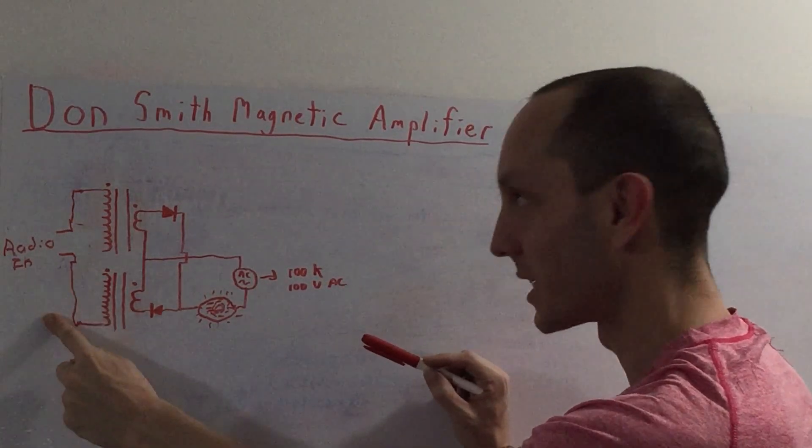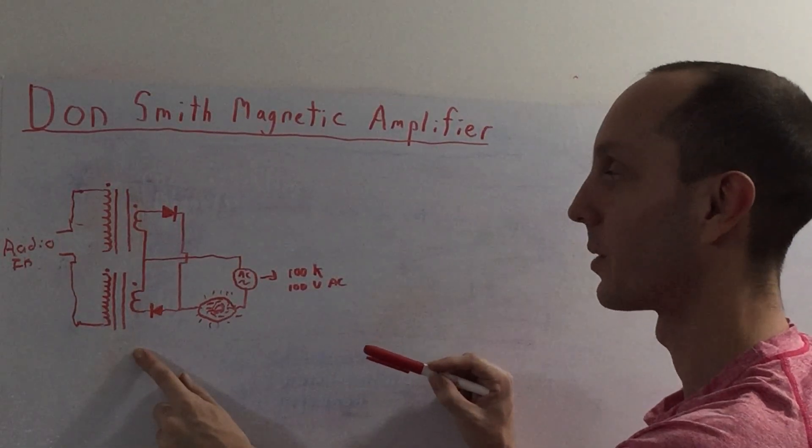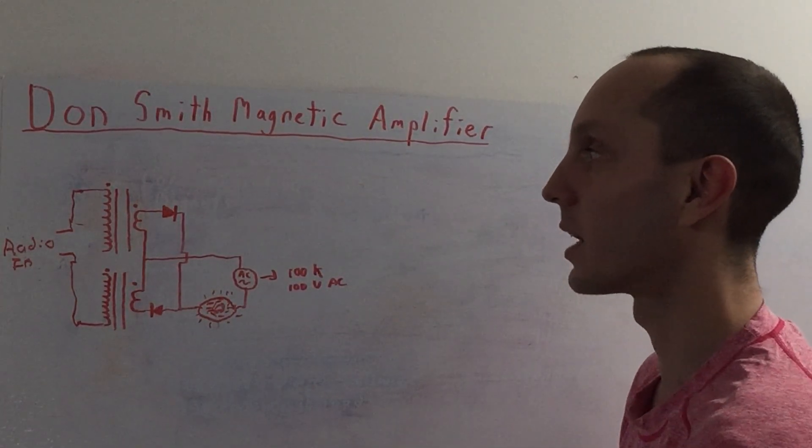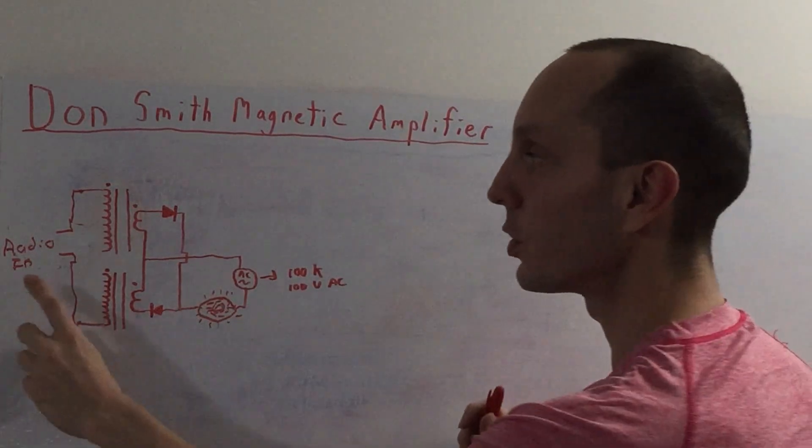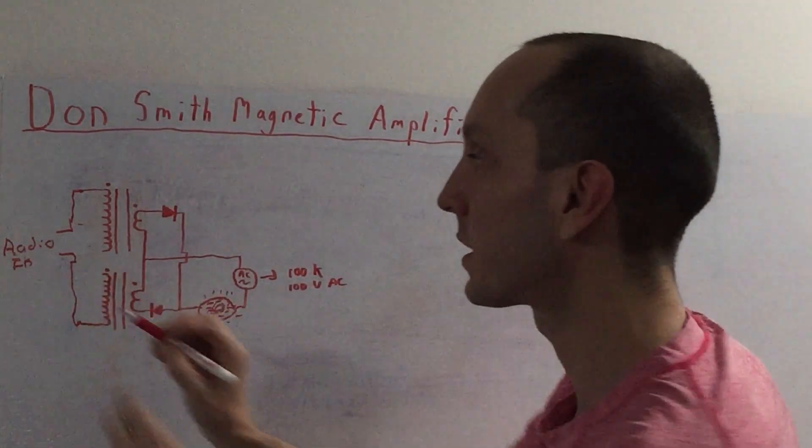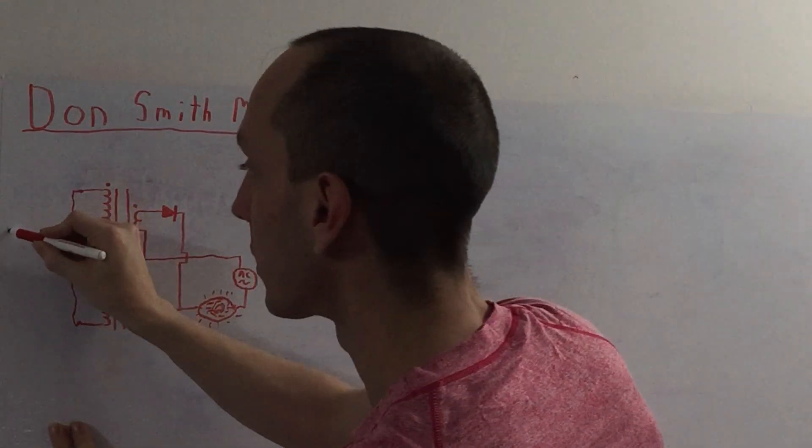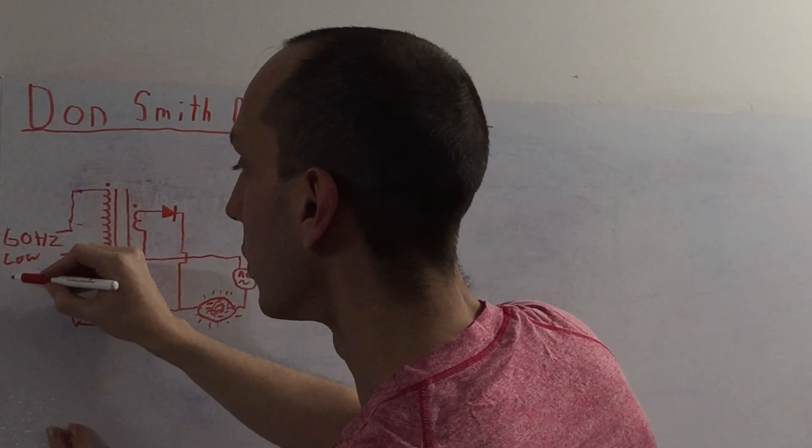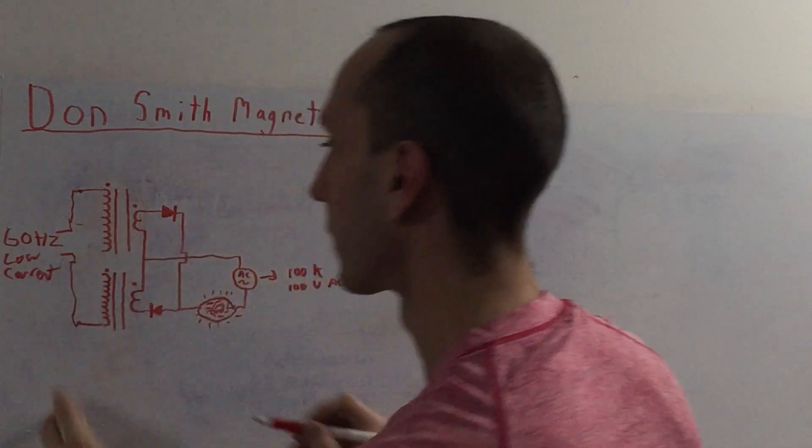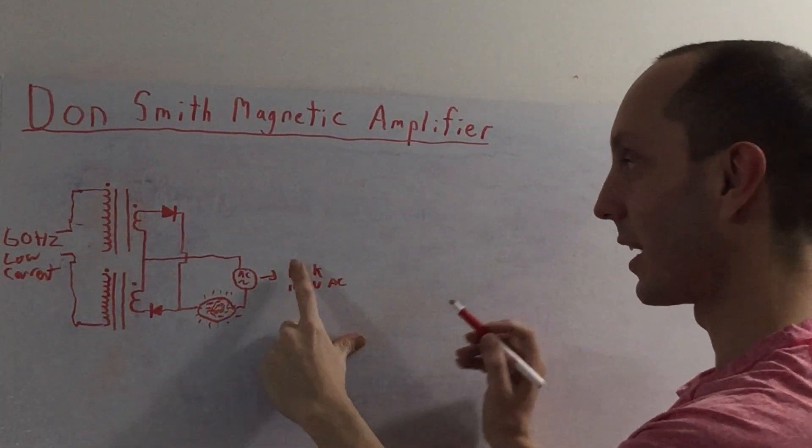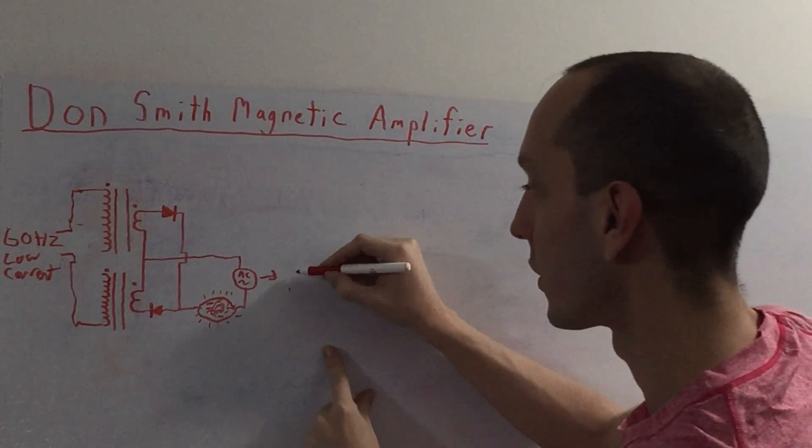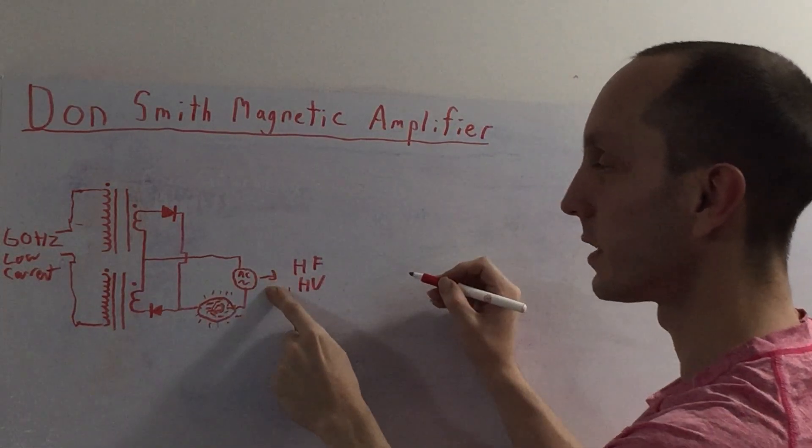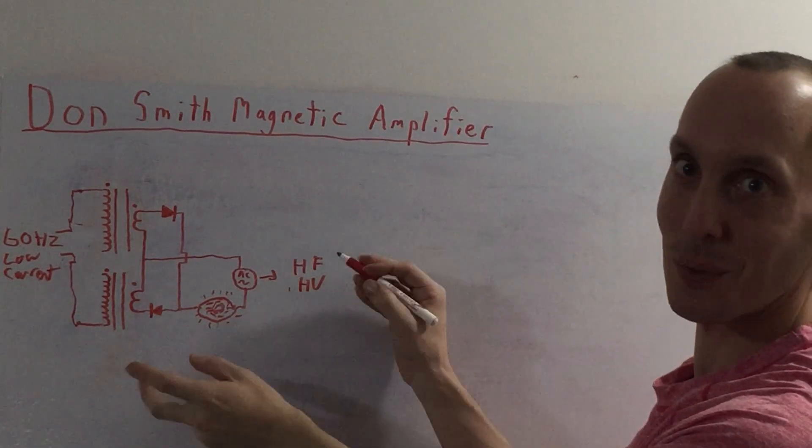So this is where it gets very good. And this is where it gets related to the Don Smith setup, right? Don Smith would use an inverter here and go 60 Hertz here. Very low. Low current. Just a trigger. And then here, you would have his high frequency, high voltage. High frequency, high voltage as his input. You start seeing the resemblances now.